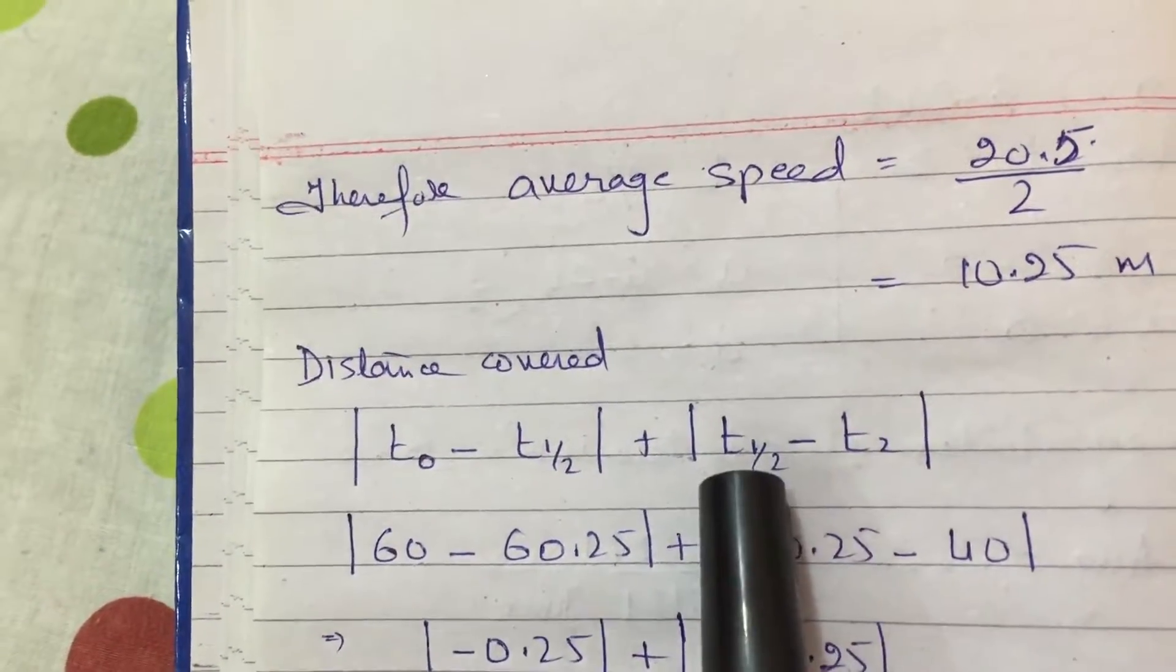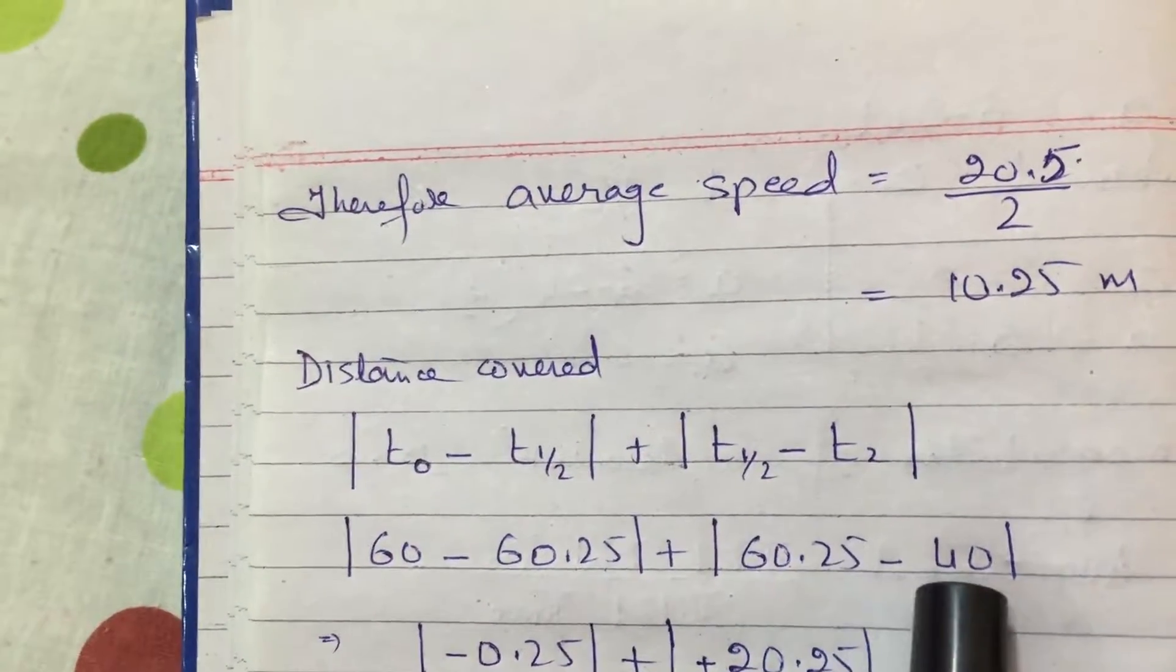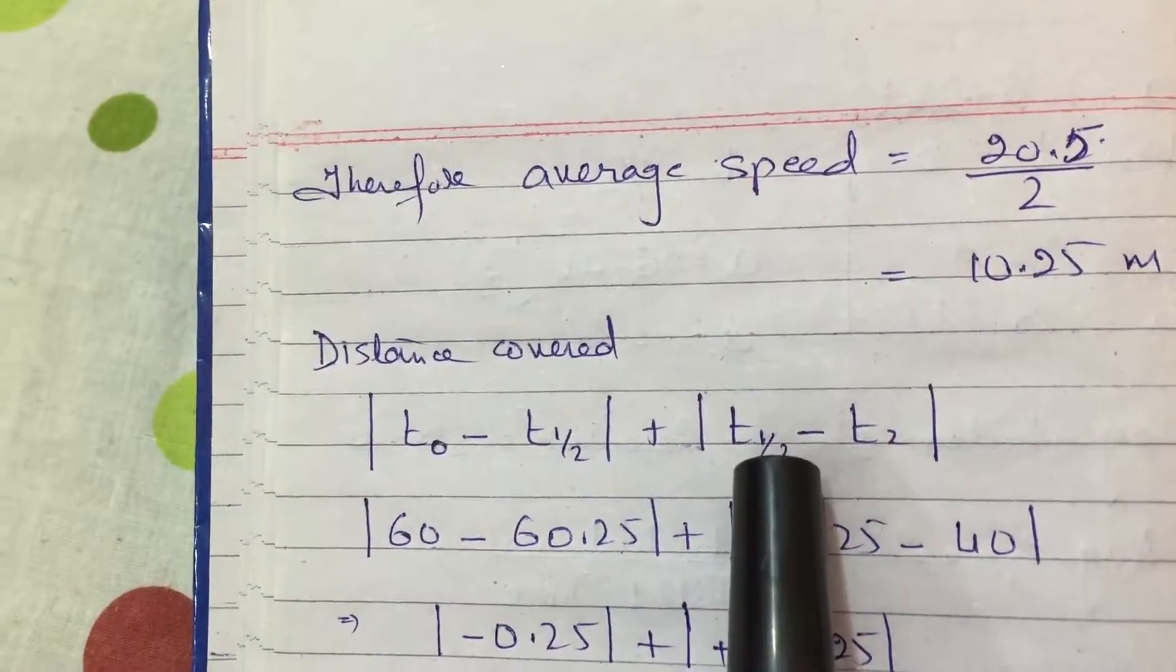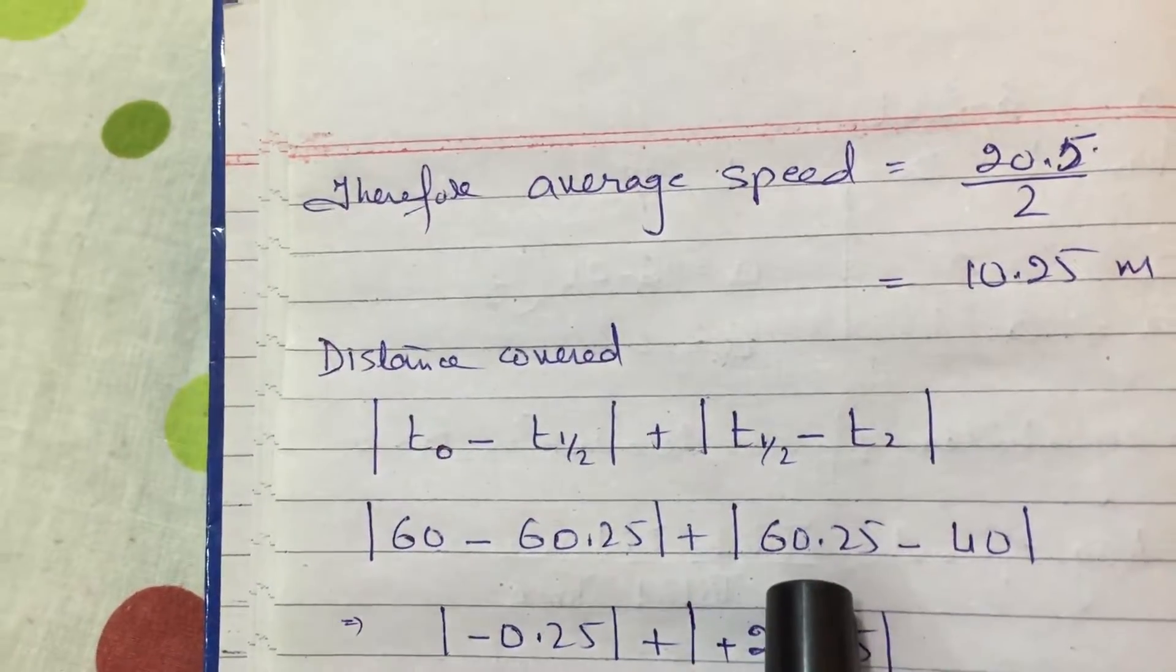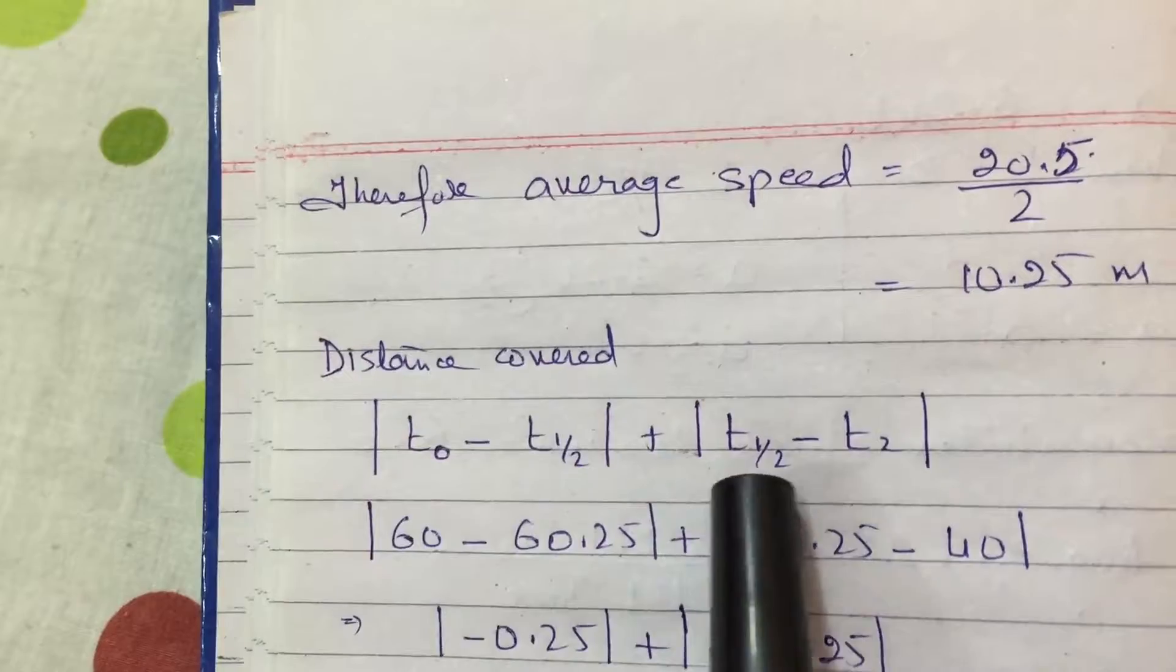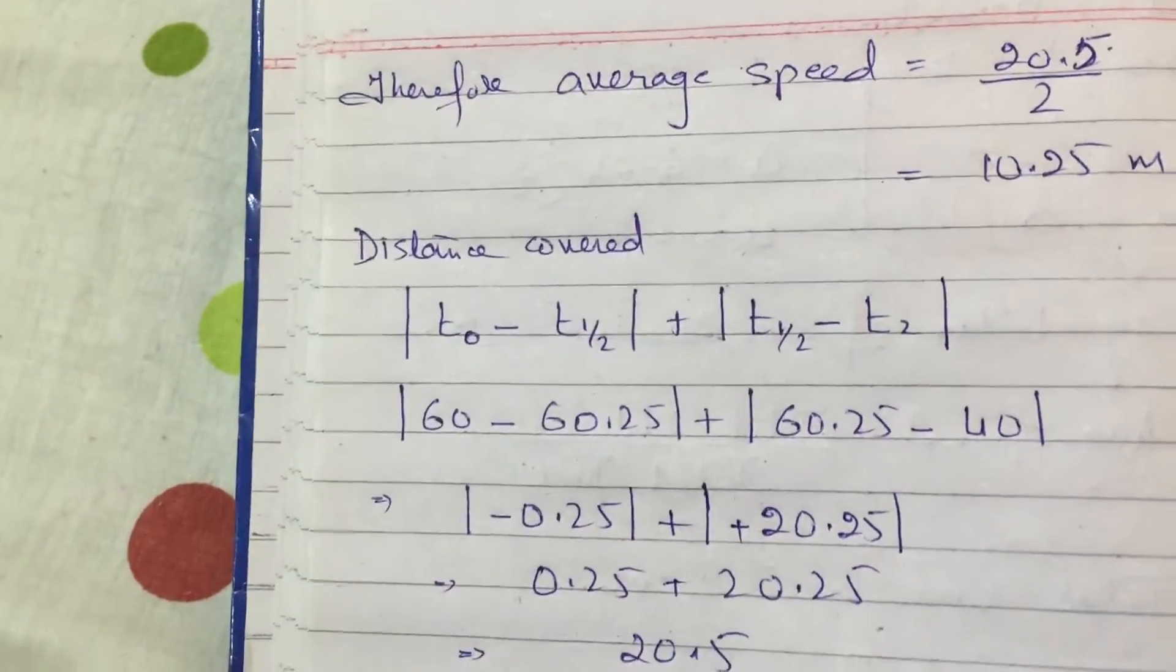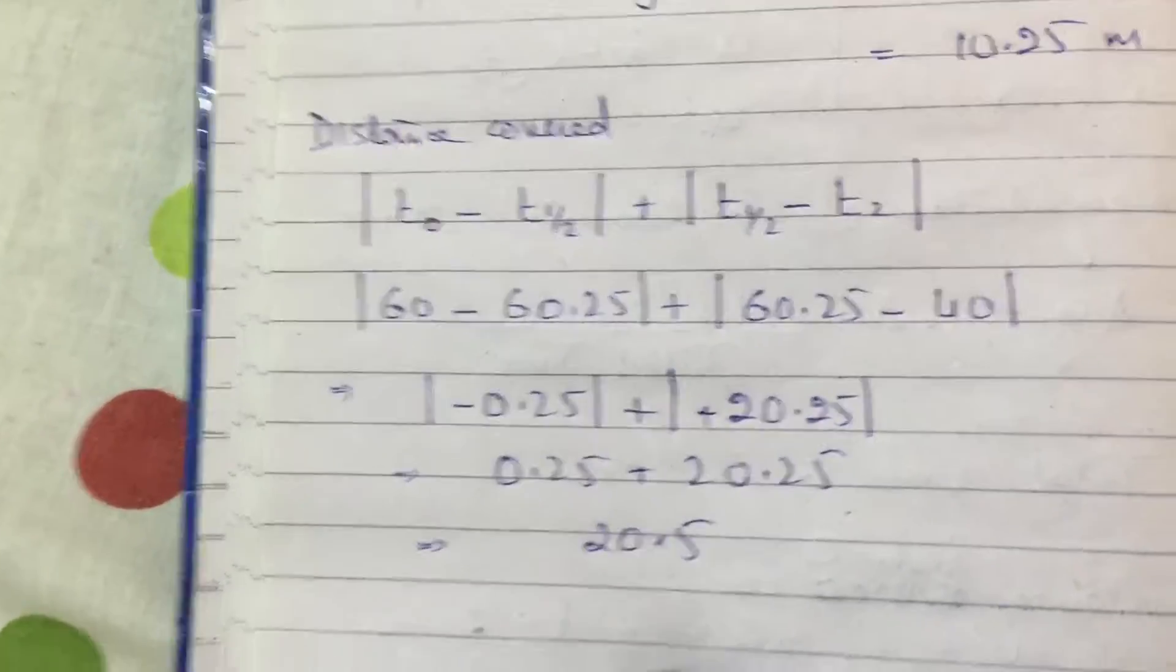Similarly from half second to 2 seconds I got 60.25 minus 40. So I am substituting these timings in the displacement equation to find out how much distance from origin is covered in these timings, and of course I am subtracting it. So my total distance will come here, which is 20.5.